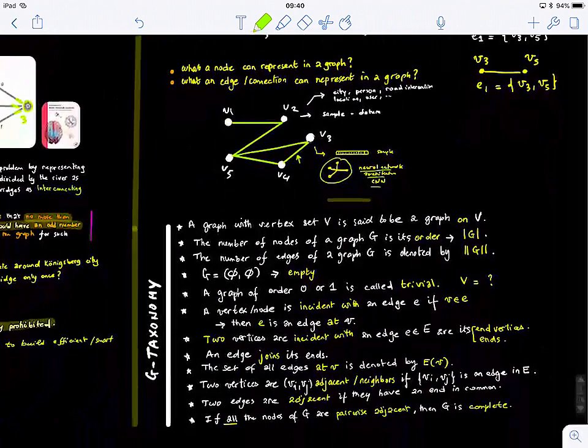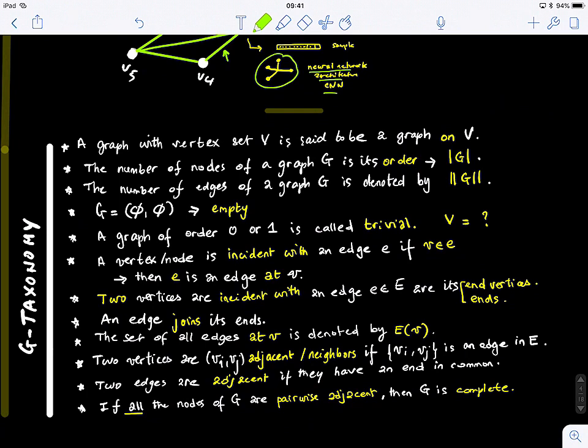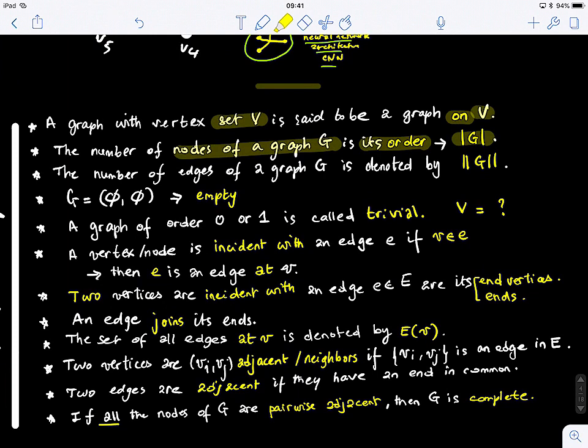Before we go ahead, let me just go through this. These are quite simple things, but you need to remember those. They're simple definitions, basic ones. A graph with a vertex set V is said to be a graph on V. This is how we speak about graphs in terms of taxonomy. The number of nodes of a graph G is its order. There are different notations, but this is a common notation. The number of edges of a graph is denoted by double bar G. A graph can be empty. It might have no nodes, no edges. This is an empty graph.